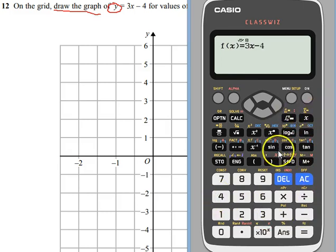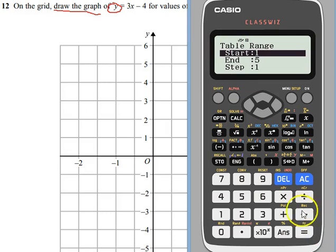If you don't have an x button, then you can use this red x here. You just press alpha, and then the bracket, and you get an x. Just type it in so it looks exactly like it does on the question, which it does. Press equals. Now on this calculator, you can do two at once, but I don't need to do a second one, so I'll just get rid of that.